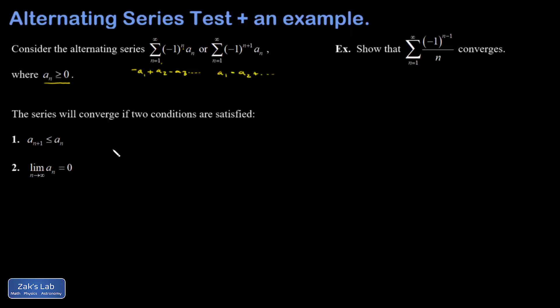All you need to do to show the convergence of an alternating series is satisfy these two conditions. The first one just says the next term has to be smaller than the previous term. The second condition says that the large n limit of the terms must go to zero. If you show these two things, then it proves convergence of an alternating series.